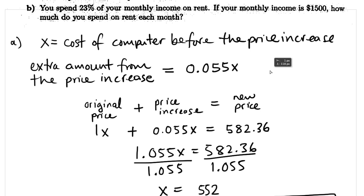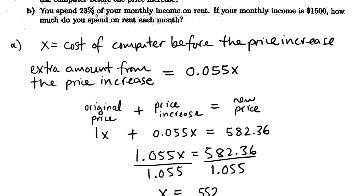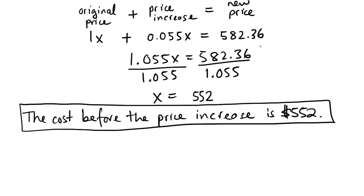B is actually even easier. You spend 23% of your monthly income on rent. If your income is $1500, all we have to do is find what 23% of 1500 is. So let's do that: 23% of 1500 dollars. I like to think, first of all, let's change this to a rate. So 0.23.